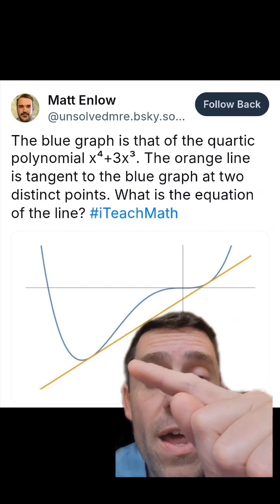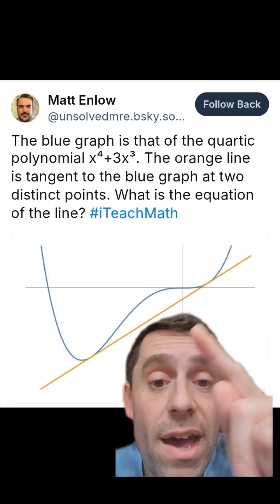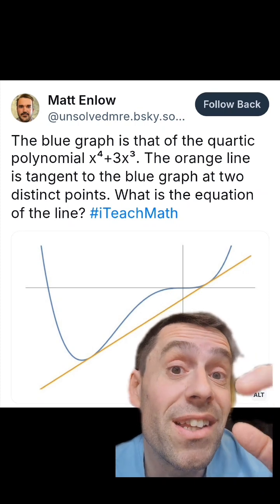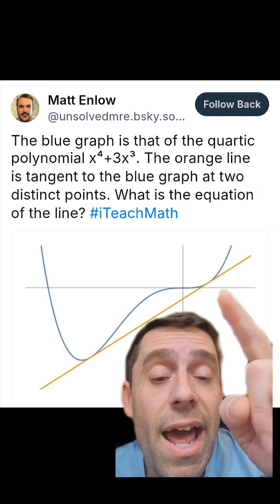And to be tangent at that other point, well, the intersection of the two has to have two different places where there is a double point, a double zero.